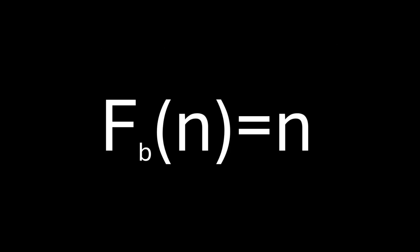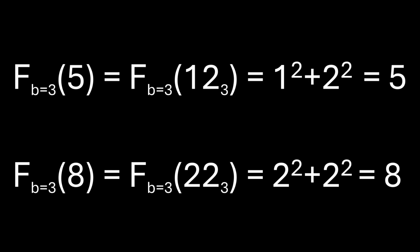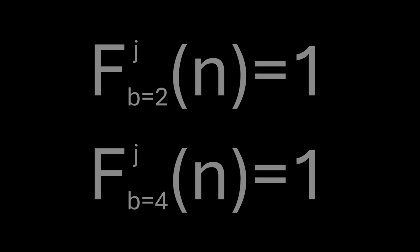As mentioned, in some bases there is more than one invariant. For example, in base 3 both 5 and 8 are invariant. Base 2 and base 4 are known as happy bases. This means that all numbers are happy in base 2 and base 4.